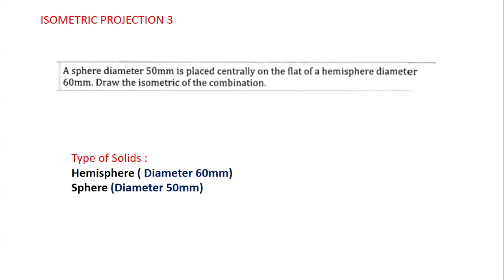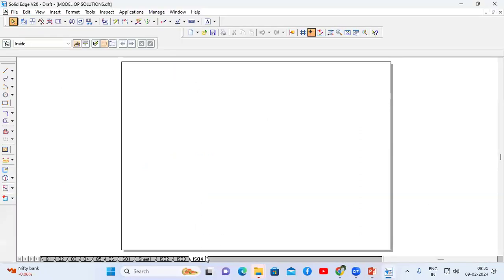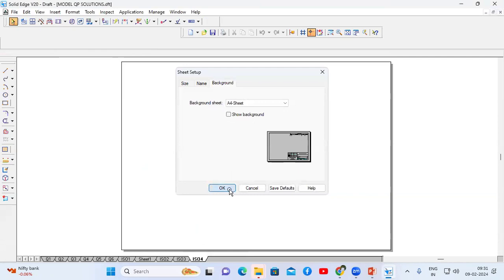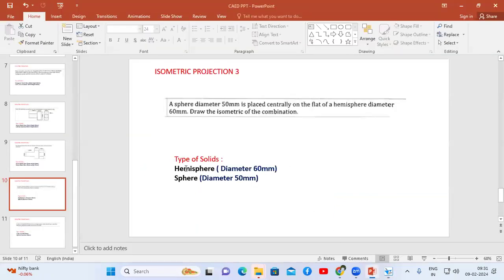We have to place the sphere on the hemisphere centrally. First, let us construct the hemisphere in Solid Edge. Go to Solid Edge and do the sheet setup — it should be A4 sheet. The dimension of the hemisphere is diameter 60mm. In order to construct the hemisphere, first I have to construct the circle.